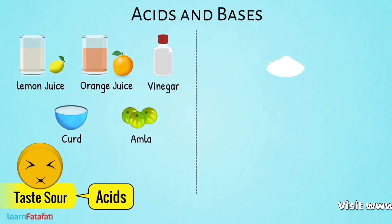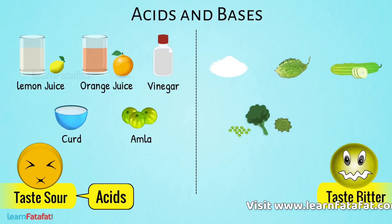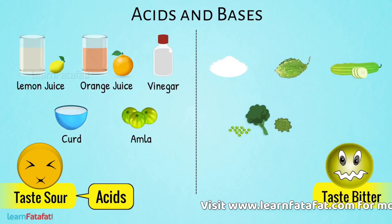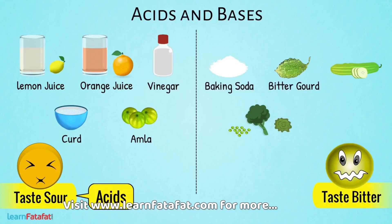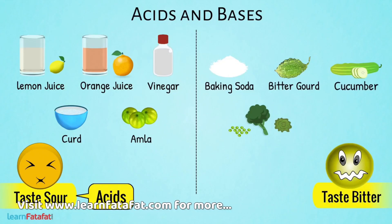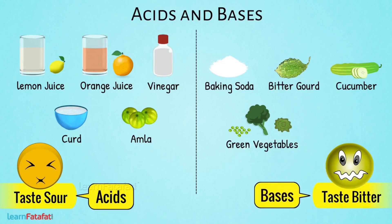There are other substances which taste bitter. For example, baking soda, bitter gourd, cucumber, green vegetables, etc. Such substances are bases.